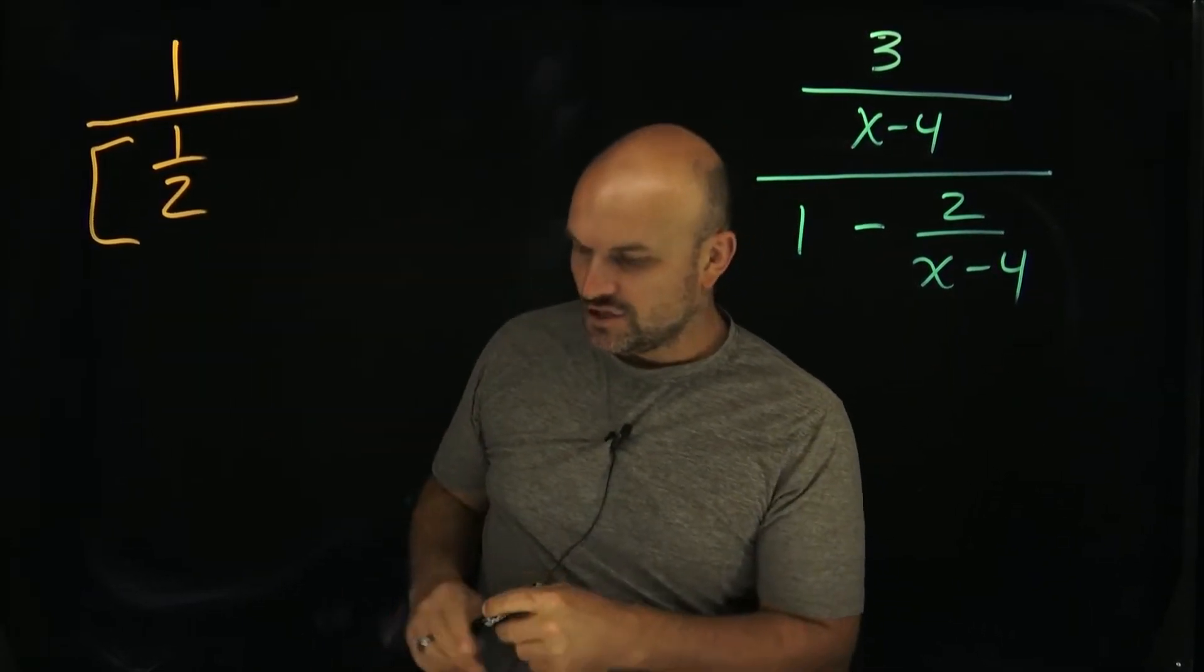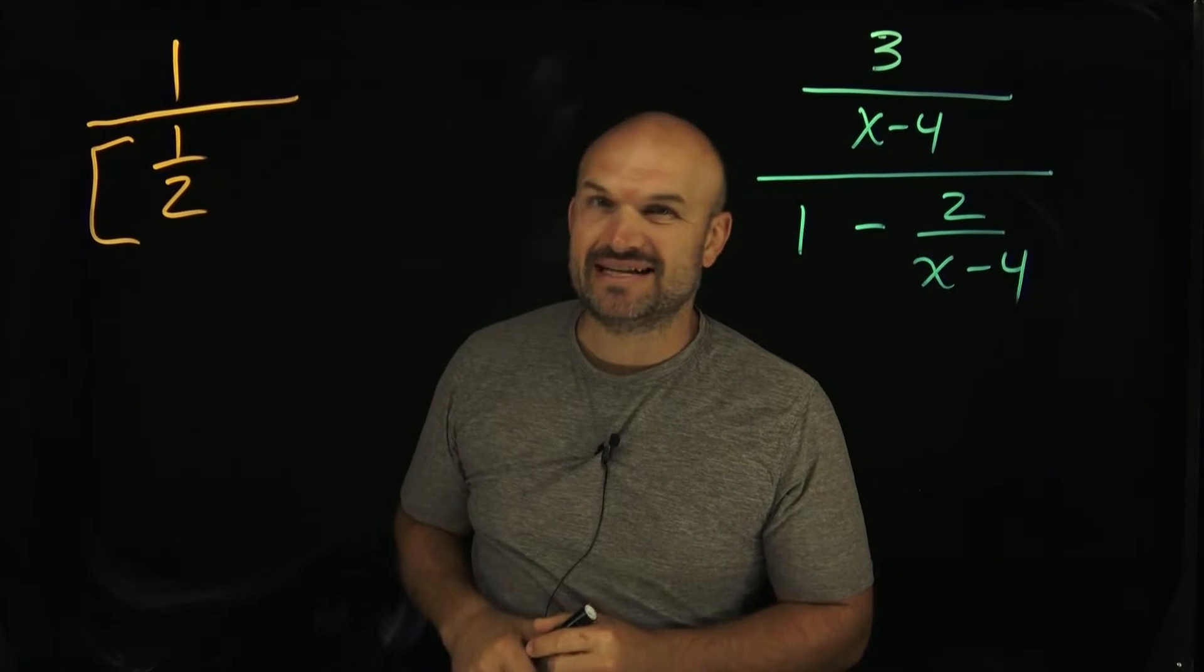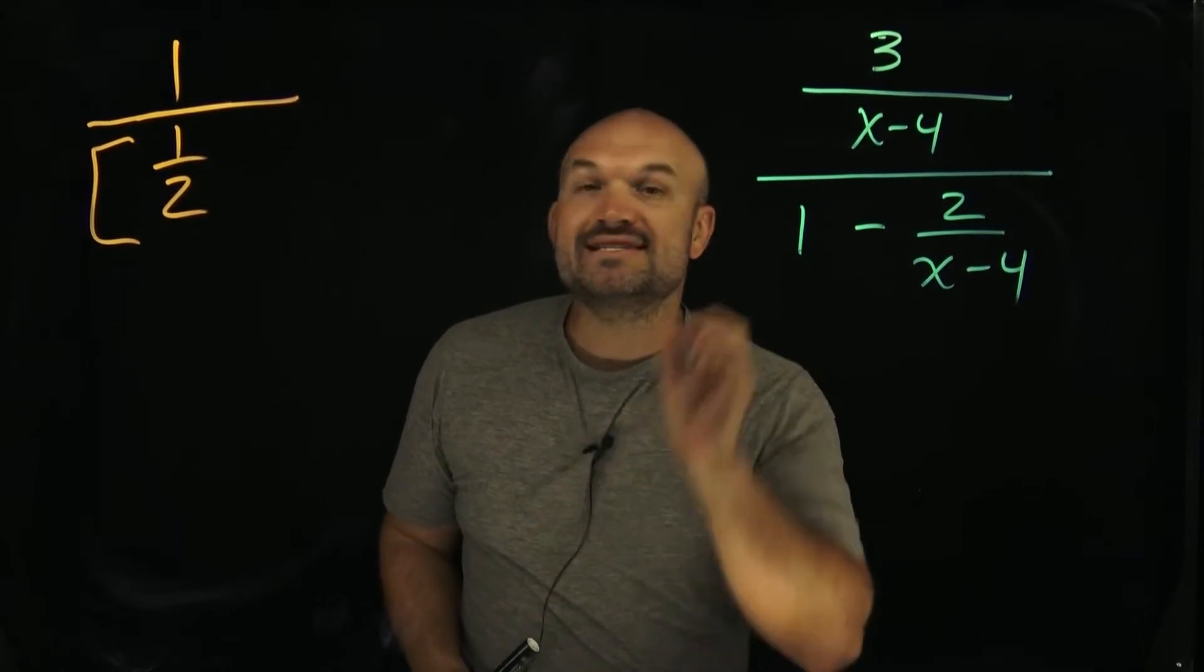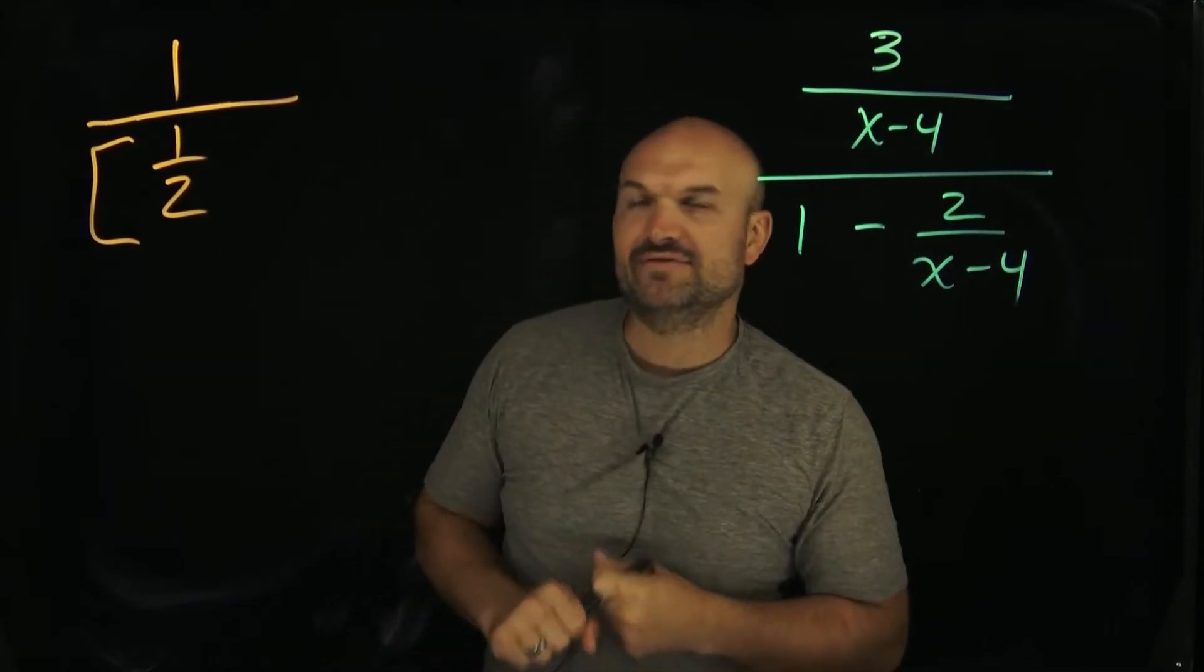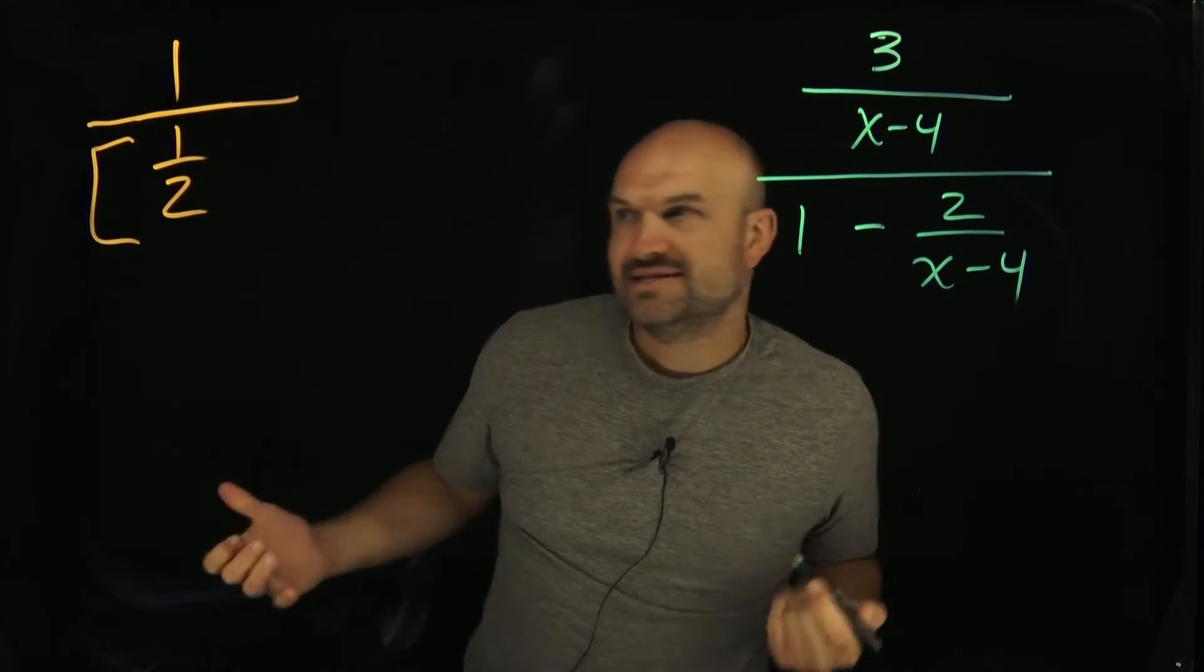2 does not evenly divide into 1. So what is the number that 2 evenly divides into? What is the smallest number that 2 evenly divides into? And you probably say, well, itself, 2, right?